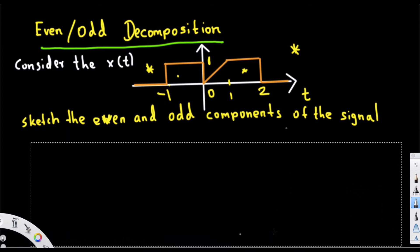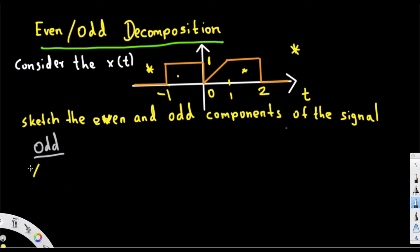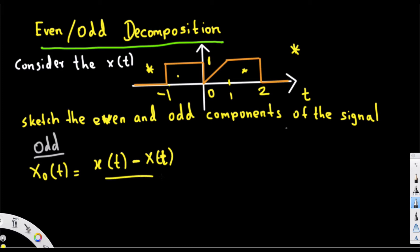Now let's look at the odd function. The only difference from the even equation is that x_o(t) uses x(t) minus x(-t), divided by two — that's the only difference from the even formula.